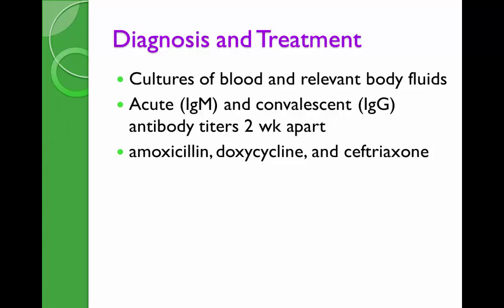Treatment should be guided by the stage. Early disease: amoxicillin 500 mg TID for 14 to 21 days, doxycycline 100 mg PO BID for 21 days, or azithromycin 500 mg once daily for 10 days. For neurological manifestations such as meningitis or Bell's palsy: ceftriaxone 2 grams IV once daily for 28 days, or cefotaxime 2 grams every 8 hours for 28 days. Penicillin 3 to 4 million units for 28 days, or doxycycline 100 to 200 mg BID for 28 days. For cardiac or arthritic involvement, use the same dosages up to 28 days. Complete heart block may require a temporary pacemaker; tense knee joints with effusion require aspiration.